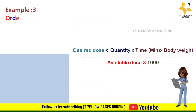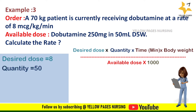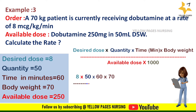Example 3: A 70 kg patient is currently receiving dobutamine at a rate of 8 microgram per kg per minute. Available dose is dobutamine 250 mg in 50 ml D5 water. The desired dose is 8, quantity is 50, time in minutes is 60, body weight is 70 kilogram, available dose is 250. Applying all into the formula, we get the answer 6.72 ml per hour.